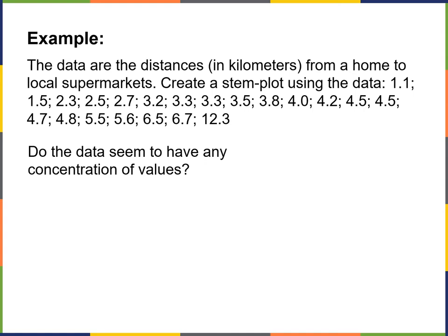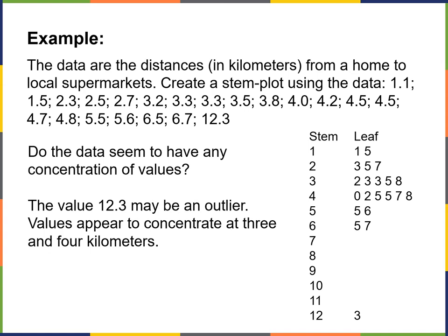Here's another example. The data are the distances in kilometers from home to local supermarkets. Creating a stem plot using this data, you can see a decent concentration of values — most people appear to have a distance between two kilometers and about five kilometers, as you can see in the stem and leaf plot. The person with a 12-kilometer distance between their house and the local supermarket is definitely an outlier.